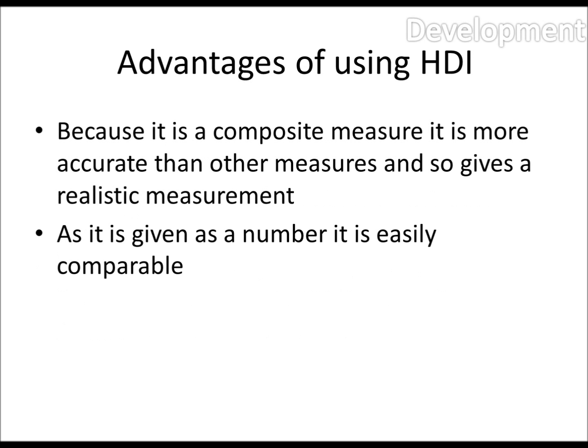The advantages of using HDI as a measure: because it's a composite measure, it is more accurate than other measures, so it gives a realistic measurement of how far a country is developed. Also, because it's given as a number on a scale from 0 to 1, it is very easy to compare with other countries.